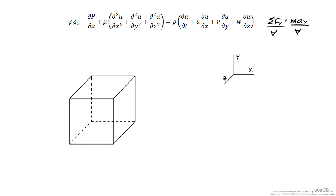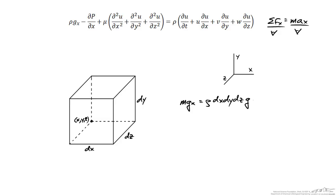Let's examine the forces acting on the differential element more carefully. We'll call this point (x, y, z). The differential element has length dx, height dy, and depth dz. The first force we'll consider is gravity — for a general case, a component of gravity could act in the x direction. The force due to gravity is the mass of the differential element times the x component of gravity, where mass equals density times volume (dx dy dz).